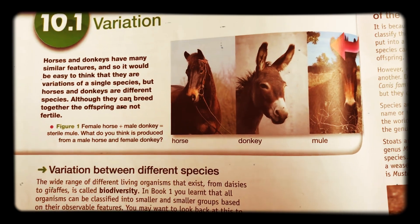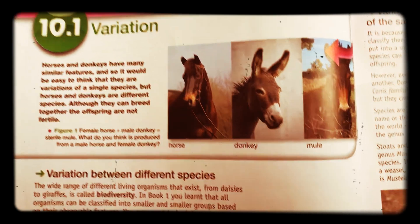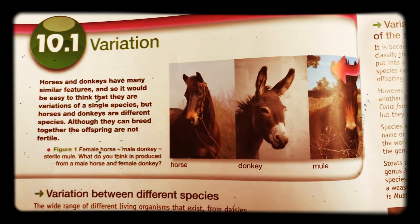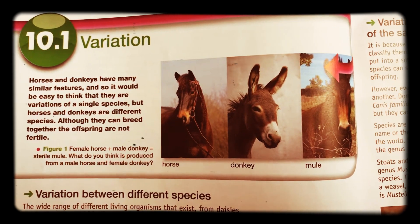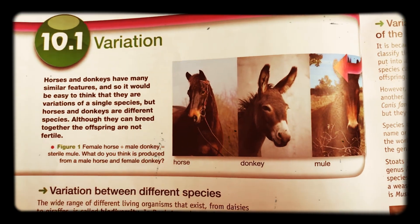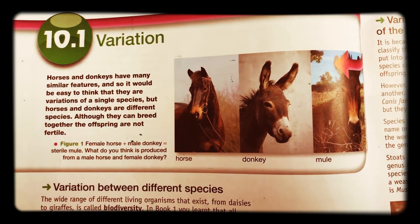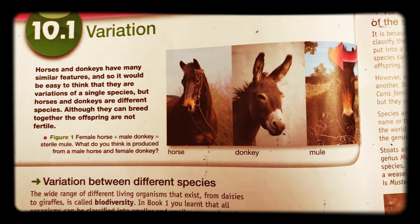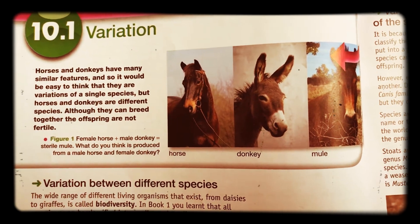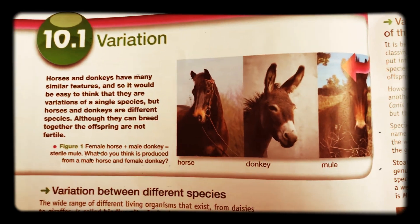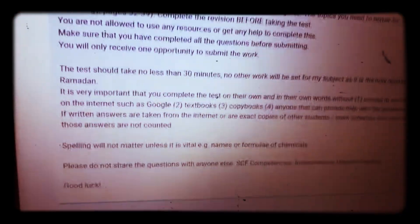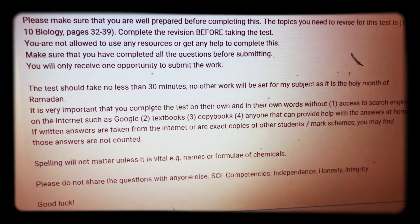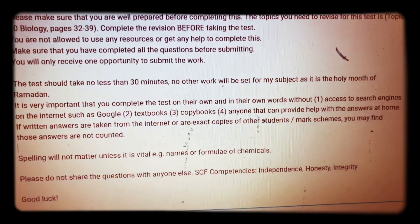The topics that you need to revise for this test are in your textbook. They are in the biology section at the start, pages 32 to 39. You must complete this revision before taking the test. You will not be able to access this info, so you're not going to be able to use any resources or get any help to complete this. You have to do it on your own, and you'll only receive one opportunity to submit this work.